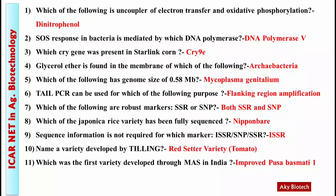Question 11: Which was the first variety developed through MAS (Marker Assisted Selection) in India? Answer: Improved Pusa Basmati 1.